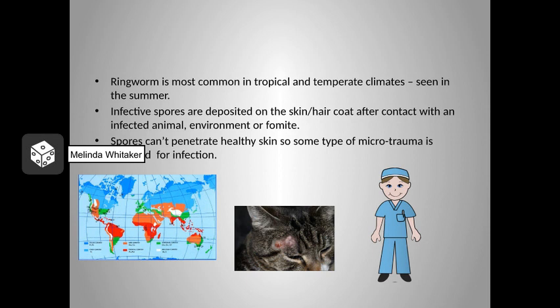Ringworm is most common in tropical and temperate climates in warm weather months. Tropical areas are seen on the map in red and temperate areas in green. Infective spores are deposited on the skin and coat after contact with an infected animal, an infected environment, or fomite. Once on the coat, spores reach the skin and hair follicles. Spores can't penetrate healthy skin, so some type of microtrauma is needed to facilitate infection. Infection requires a source of exposure, compromised defenses, increased warmth and humidity, and microtrauma. Fleas are a common source of microtrauma.